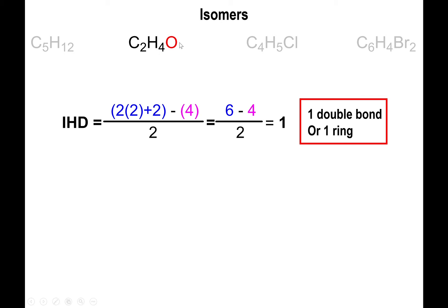When introducing extra elements like oxygen that can have more than one bond, recall from Lewis structure that oxygen can have up to two bonds, since 8 minus group number 6 equals 2. The IHD of 1 means oxygen could end up as a double bond functionality. We have two carbons and one oxygen — those are the key elements, drawn three times for three possibilities. Neither a double bond nor a ring has been drawn yet, so we'll introduce those changes.